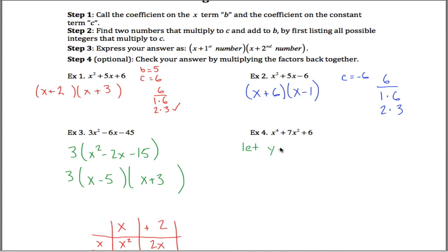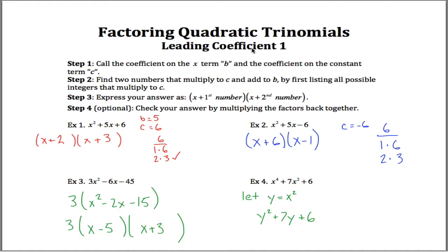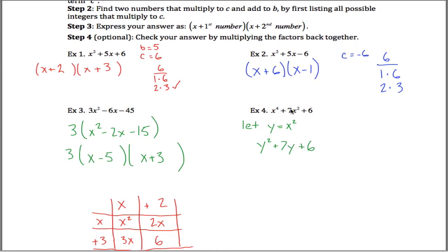If you change all the x squareds into a different letter, maybe y, then what you have here is really x squared squared. x to the 4th is the same as x squared squared, so I can write it as y squared plus 7 and then instead of writing x squared here I'll write y because y is x squared plus 6. So really what I can do is I can do this little substitution and now what I have here is a quadratic trinomial whose leading coefficient is 1. Yeah, it doesn't have x's anymore, it has y's, but that's okay, I can deal with that.